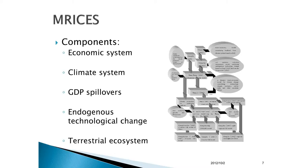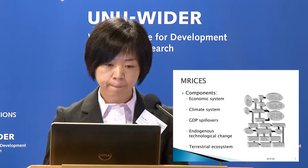There are five components in our model, including the economic system, climate system, GDP spillovers, induced technological change, and the terrestrial ecosystem.